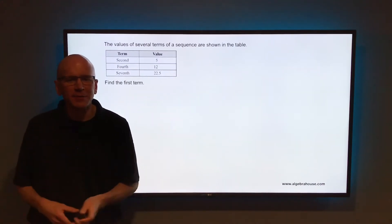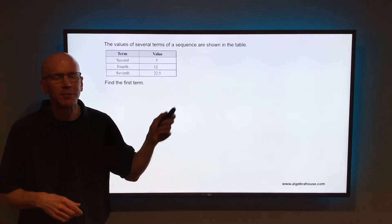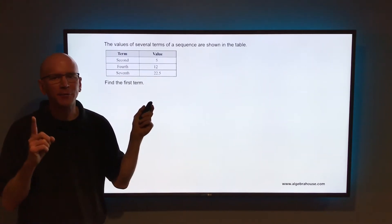The values of several terms of a sequence are shown in the table. The second term is 5, the fourth term is 12, and the seventh term is 22.5. We need to find the first term.